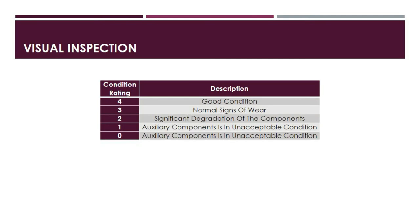Next is Visual Inspection. For a rating of 4, all components including electrical conductors, connectors, grading rings, etc., are clean, corrosion-free, and in good condition, with no external evidence of overheating or any other abnormalities. For a rating of 3, there are normal signs of wear and conditions normal with age. For a rating of 2, there is significant degradation of components such as conductors, connectors, and grading rings, but overall the condition is still acceptable. A rating of 1 means one of those components is deemed unacceptable but is repairable. A rating of 0 means a component is in unacceptable condition and cannot be repaired.